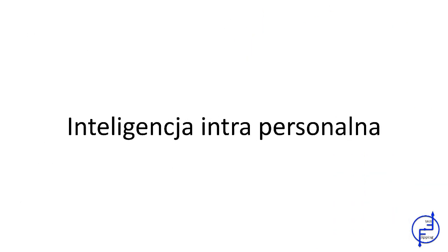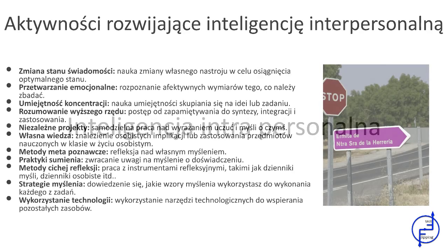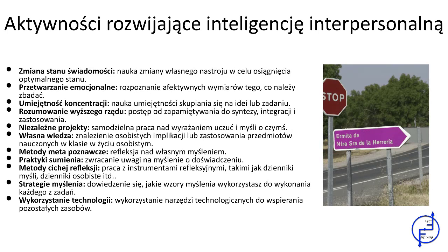Na koniec, jak kształcić inteligencję intrapersonalną? Poznanie siebie i posiadanie przestrzeni do myślenia są jednymi z podstaw tej inteligencji, ponieważ pozwalają na nauczenie się zmieniania swojego nastroju, aby osiągnąć optymalny stan psychiczny, rozpoznawania wymiaru afektywnego tego, czego się uczymy, rozwijania zdolności koncentracji i bardziej złożonego rozumowania, samodzielnej pracy i wyrażania uczuć, dostrzegania zastosowania tematów w życiu osobistym oraz refleksji poprzez dzienniki, osobiste pamiętniki i rozpoznawanie schematów myślenia.